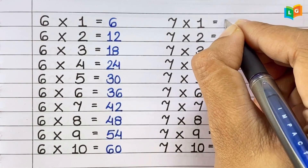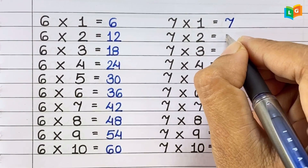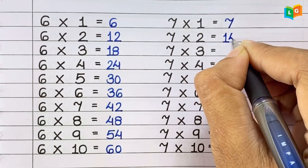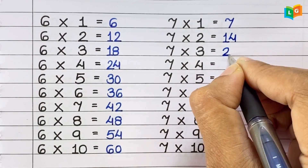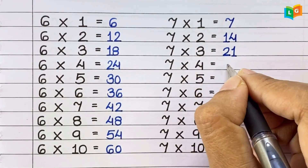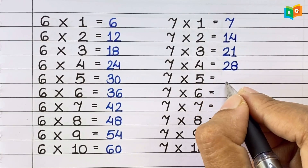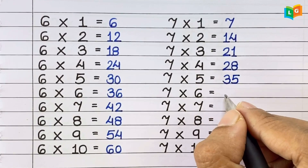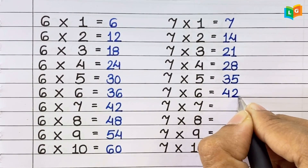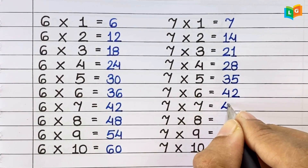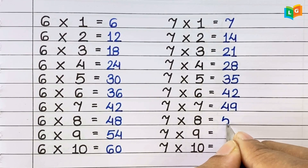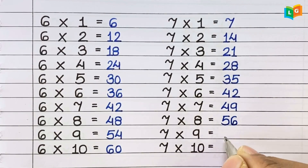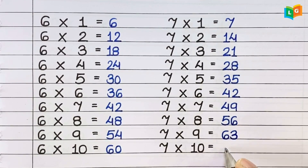Now let's see table of 7. 7 1s are 7, 7 2s are 14, 7 3s are 21, 7 4s are 28, 7 5s are 35, 7 6s are 42, 7 7s are 49, 7 8s are 56, 7 9s are 63, 7 10s are 70.